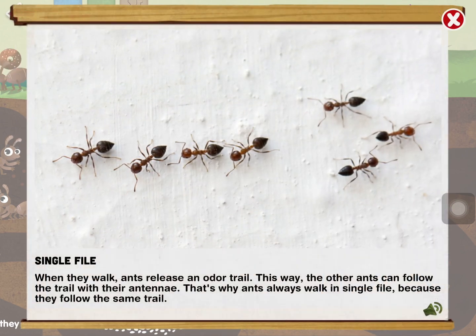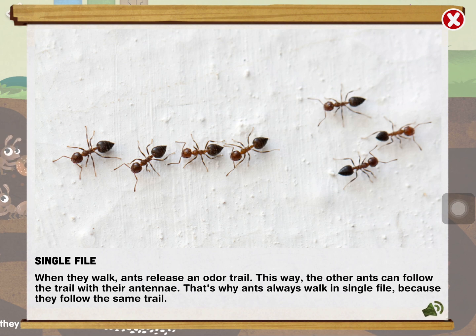When they walk, ants release an odor trail. This way other ants can follow the trail with their antenna. That's why ants always walk single file, because they can follow the same trail.